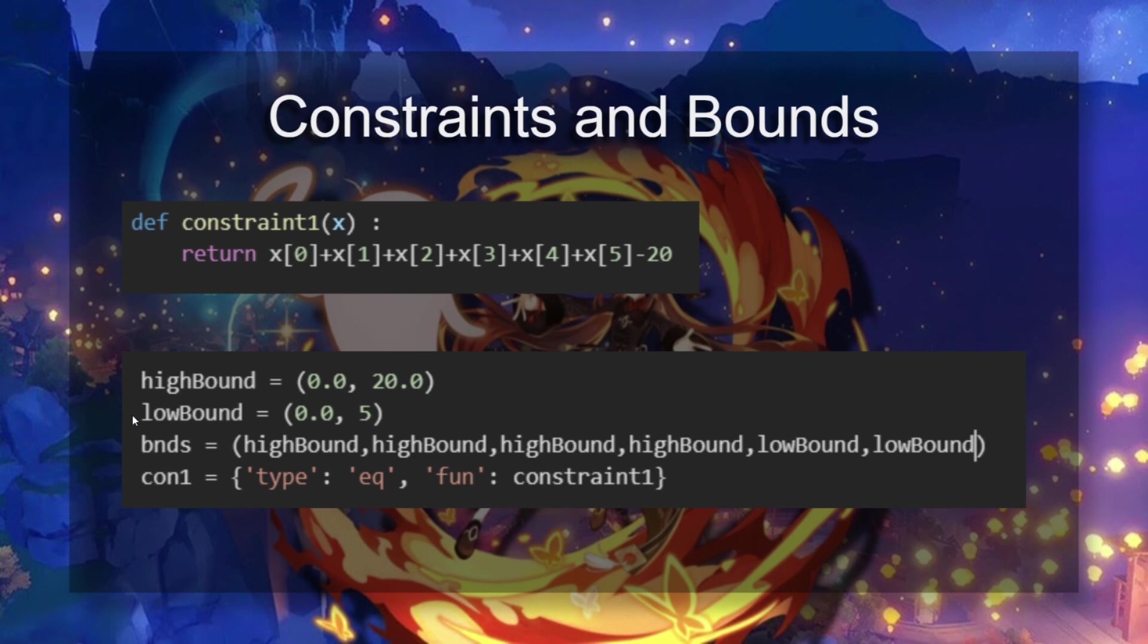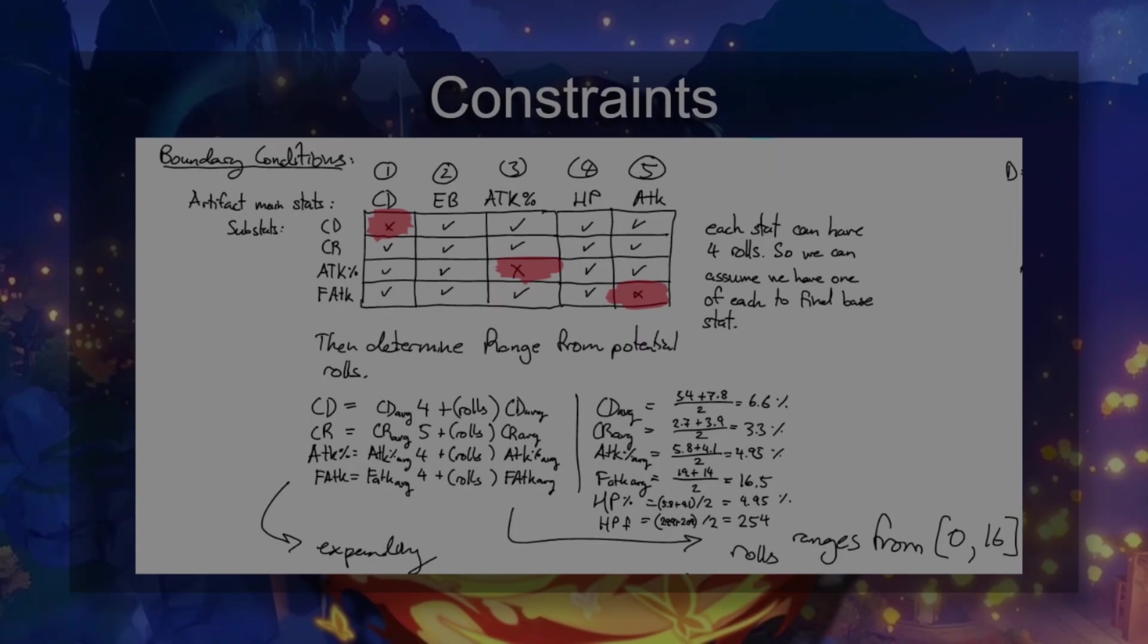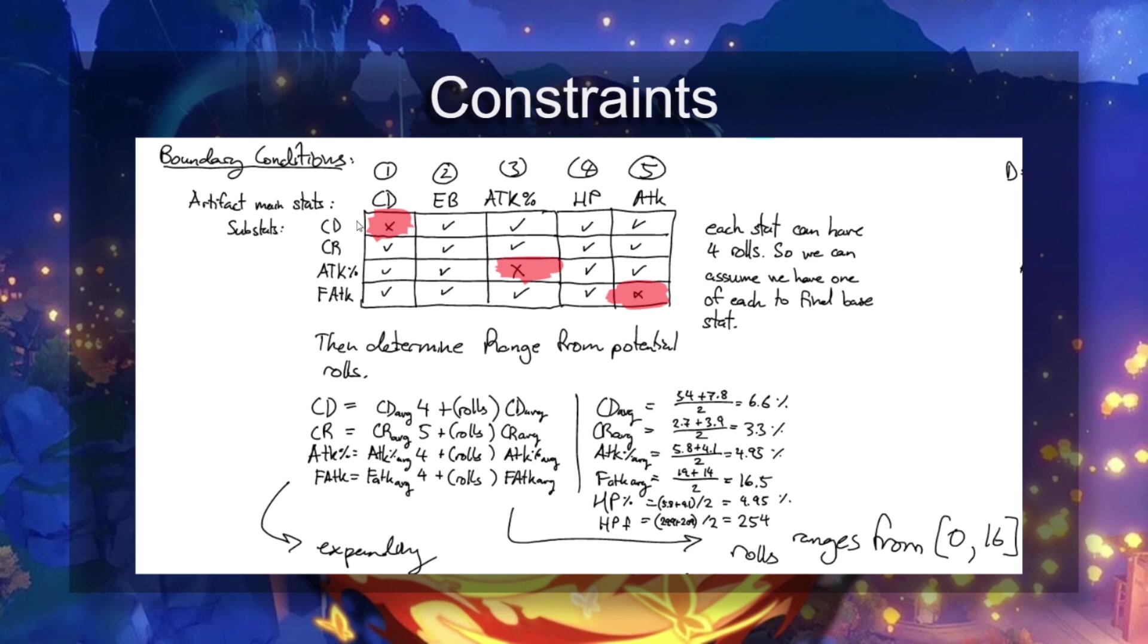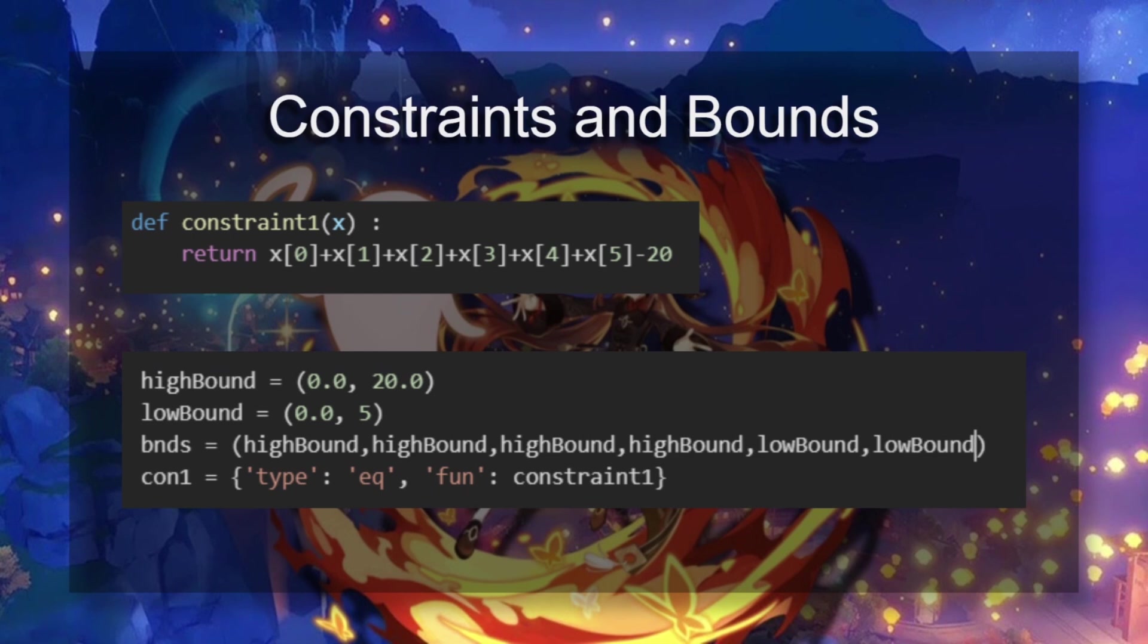Then we're going to put a high bound and a low bound in. A low bound doesn't really matter here. I was using this to just kind of show a point at the end, which we're going to see later. But the high bound is that we're going to assume that there's 20, each stat can roll 20 times. If we go back, we can see here that crit damage can never show up on the crit damage main stat artifact. So it can show up five times for four artifacts. There's 20 rolls. If every single roll goes into it, then you can get 20 rolls.